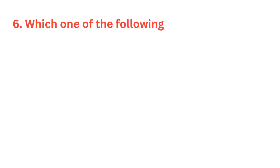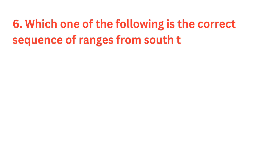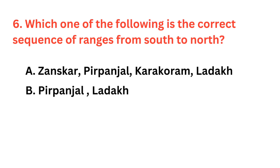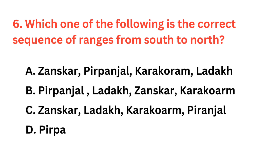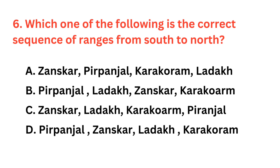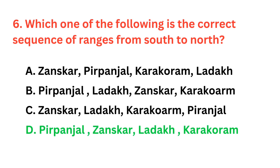Which one of the following is the correct sequence of ranges from south to north? The correct answer is option D: Pir Panjal Range, Zanskar Range, Ladakh Range, and the northernmost is Karakoram Range.